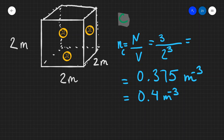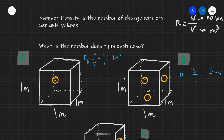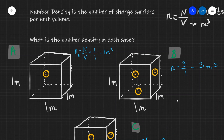So every time we need to calculate number density, it is equal to the number of charge carriers per unit volume. Hopefully number density makes sense now. If there are any questions, please feel free to drop a comment and I'll do my best to answer as quickly as I can. Thank you very much for watching.